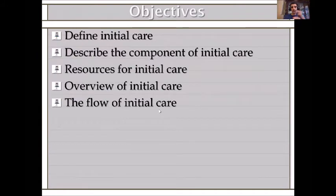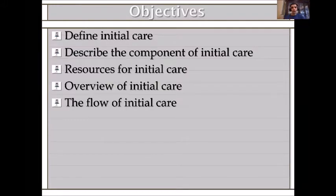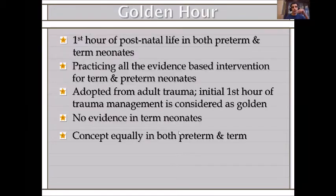The objectives of this talk are to define what is initial care, to define its components, and to discuss some resources, an overview, and how the initial care should be organized. There is something called the golden hour — it's the first hour of postnatal life in both preterm and term neonates. It depends on using the best evidence to practice in term and preterm babies to get the best results and to prevent complications.